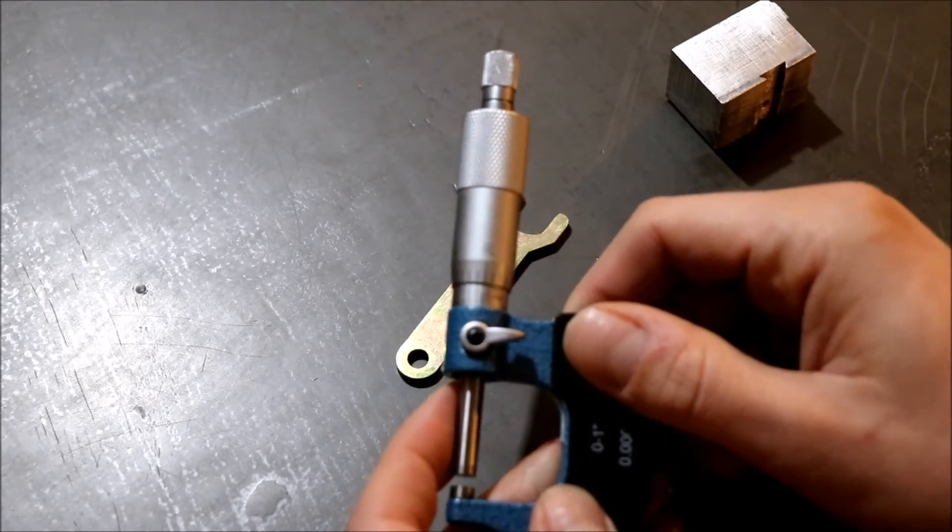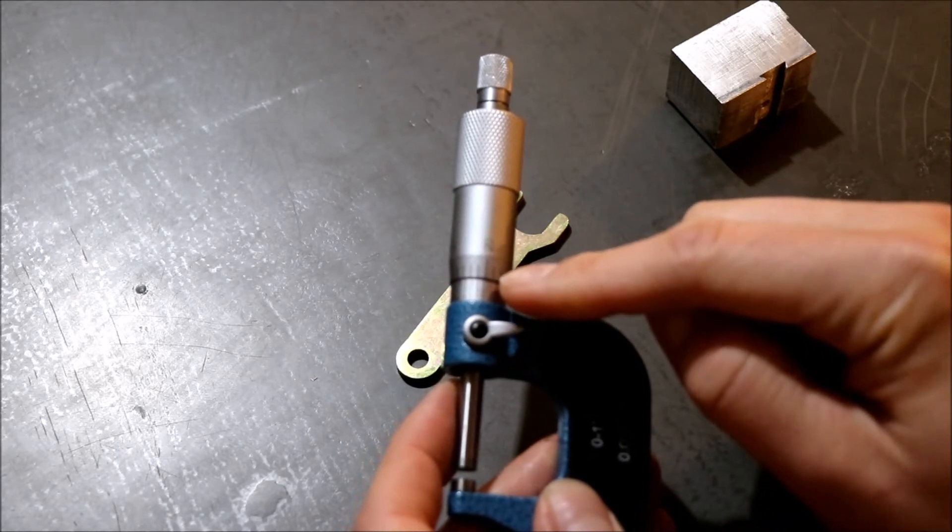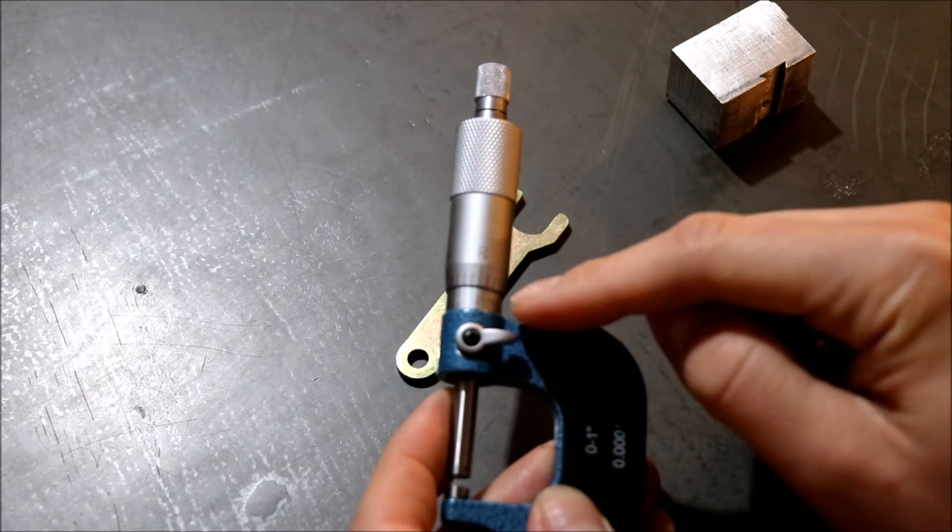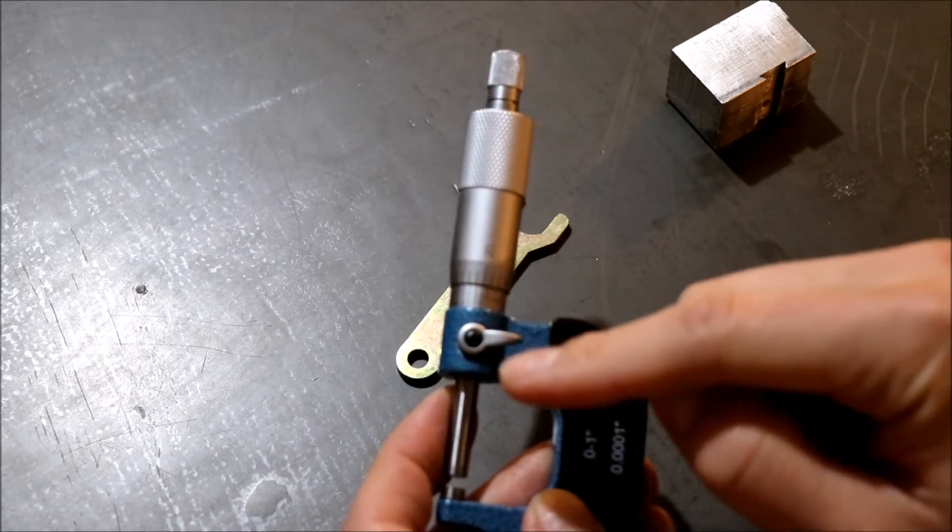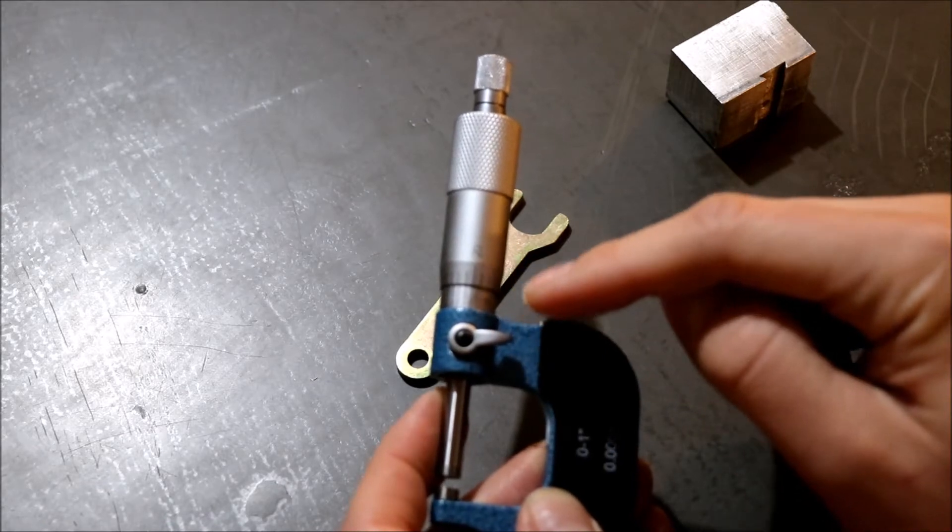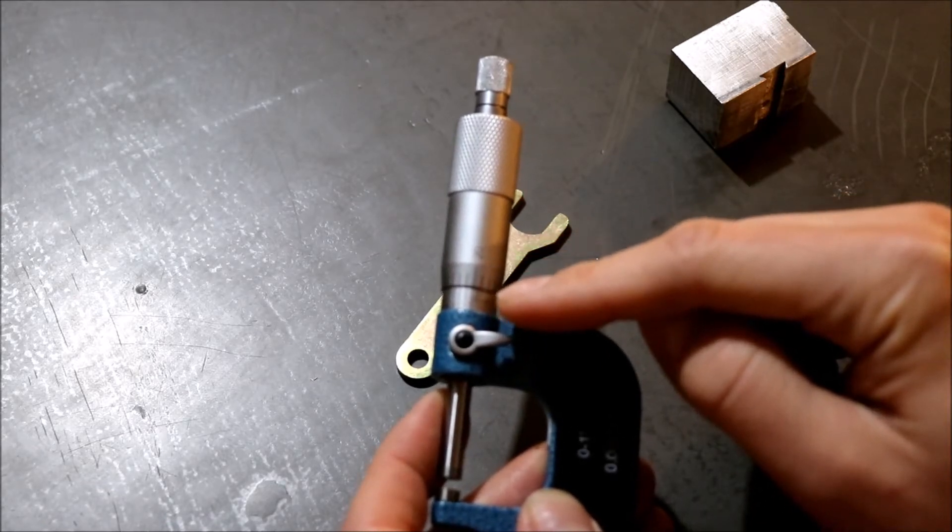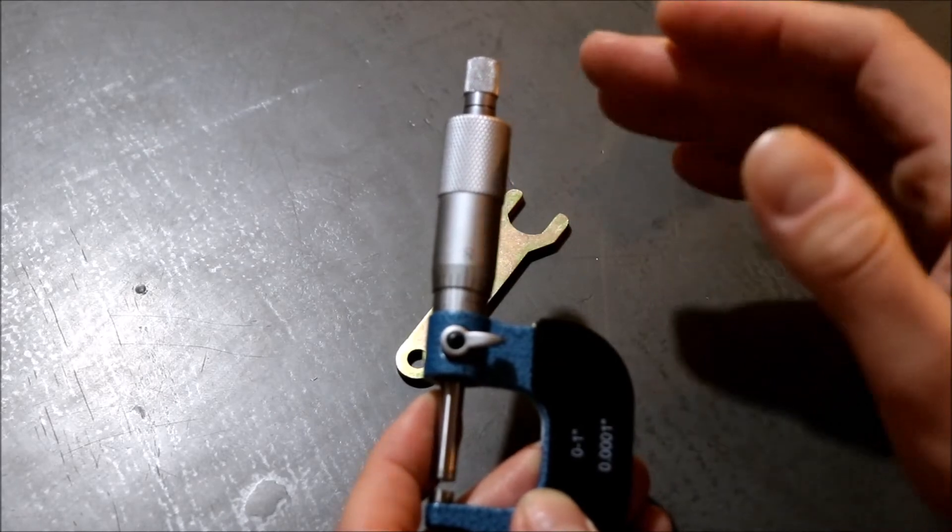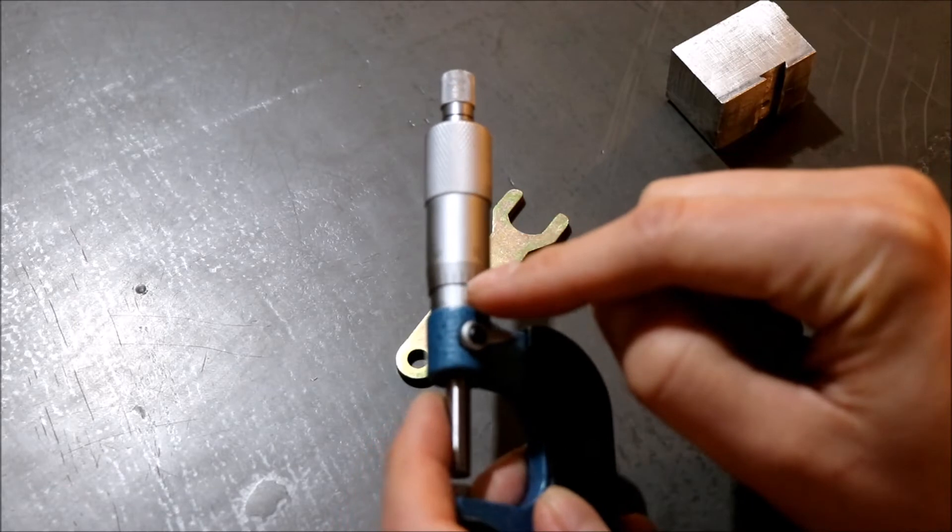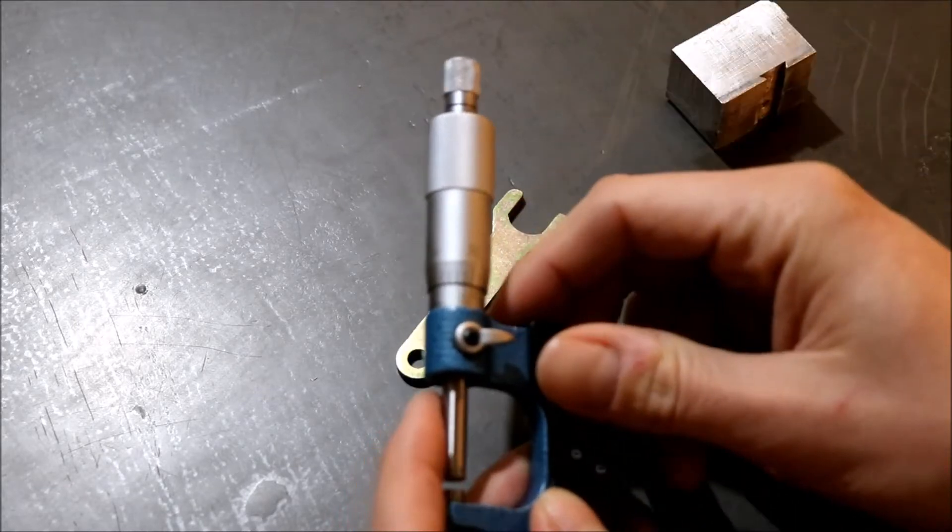And then we're looking at which line lines up with the center point here. And in this case the number 20 on the barrel is what lines up. So now we're at 120 thousandths of an inch which actually gives us our second and third decimal place. If it was at the 21 it would be 121 and so forth.